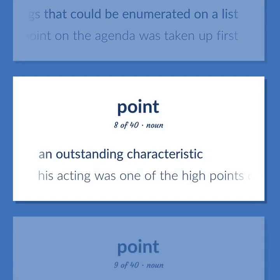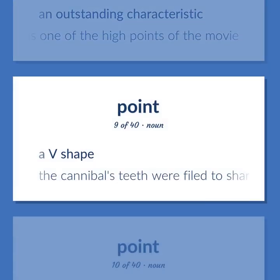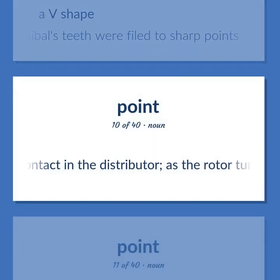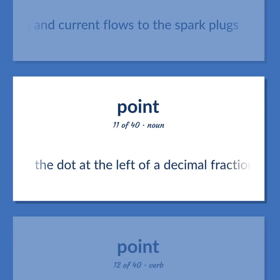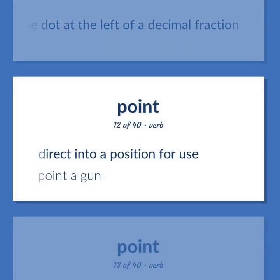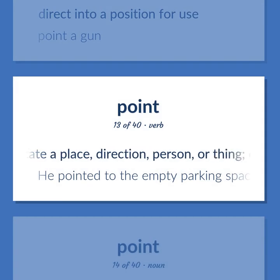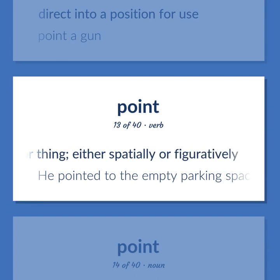An outstanding characteristic — his acting was one of the high points of the movie. A V shape — the cannibal's teeth were filed to sharp points. A contact in the distributor as the rotor turns. The dot at the left of a decimal fraction. Direct into a position for use — point a gun. Indicate a place, direction, person, or thing, either spatially or figuratively — he pointed to the empty parking space.